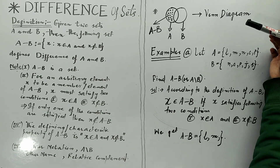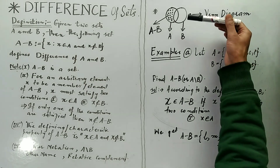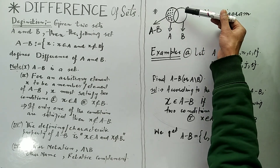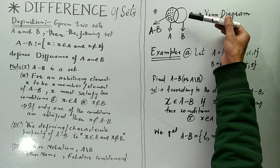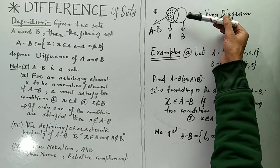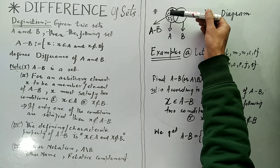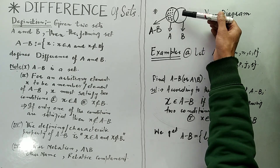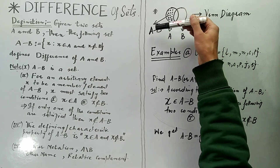Now, how does the difference of two sets look diagrammatically? Suppose my first set is A represented by one circle, and the second set B is another circle. A minus B consists of all the elements of A such that those elements do not belong to the set B. The shaded portion in the diagram represents A minus B, or the complement of B with respect to A.